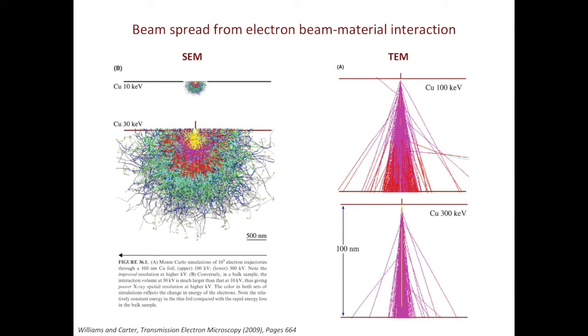In the right column of the slide, that shows the Monte Carlo simulation of electron beam interacting with the TEM foil. Because the TEM foil has finite thickness, you will see very different observations compared to SEM. When the acceleration voltage is low, such as 100 keV, we have a lot of beam spread, as shown here.